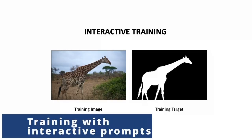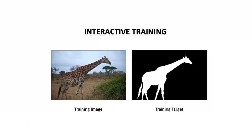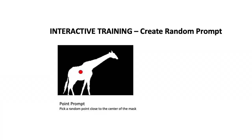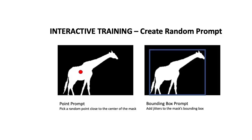So imagine you already have a dataset of images and their annotations. How are you then going to train a promptable model that can output valid masks given user prompts? The authors adopt an interactive iterative strategy. Given an image and segmentation target they first randomly create a prompt. This could be a point prompt which they simulate by randomly choosing a point close to the center of the ground truth mask or a bounding box prompt that they create by adding random jitters to the corners of the ground truth mask's bounding box.